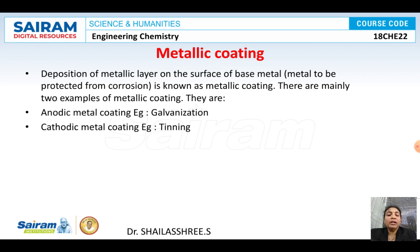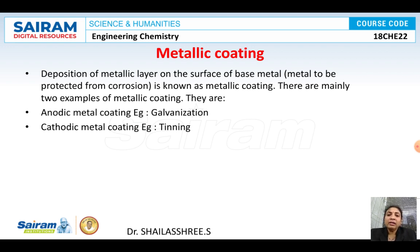What are metallic coatings? It is the deposition of a suitable metal layer on a base metal. We consider iron as the base metal. When iron is coated with any other metal to protect it from corrosion, that is called metallic coating. Under metallic coatings there are two types: anodic metal coating and cathodic metal coating. The example for anodic is galvanization and for cathodic, the example is tinning.